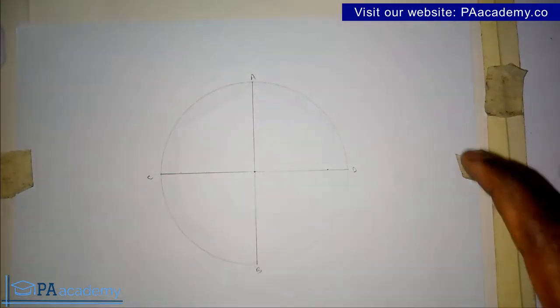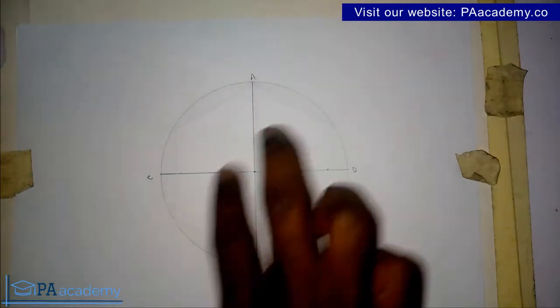Now what we want to do - we are dividing this circle into 12. Right now what we have is 4, but we're going to be dividing it into 12.